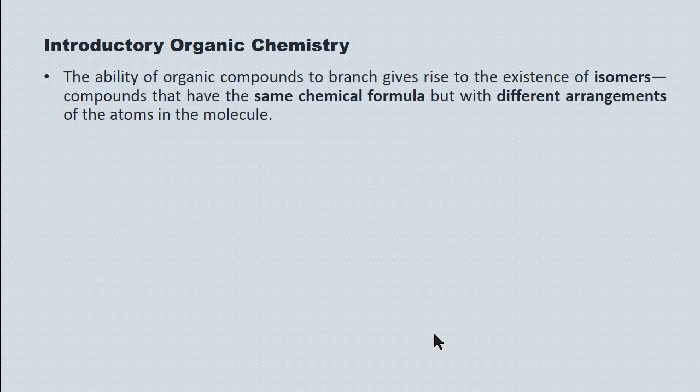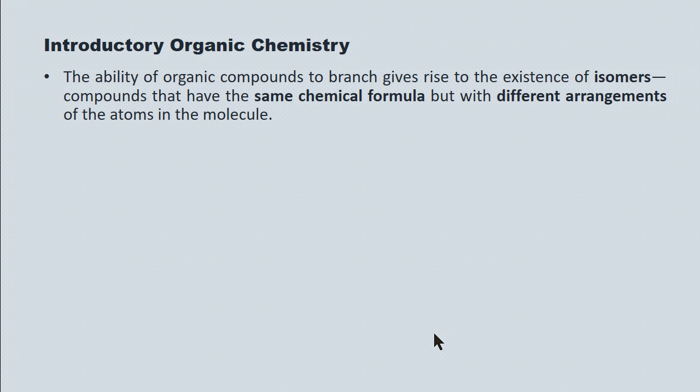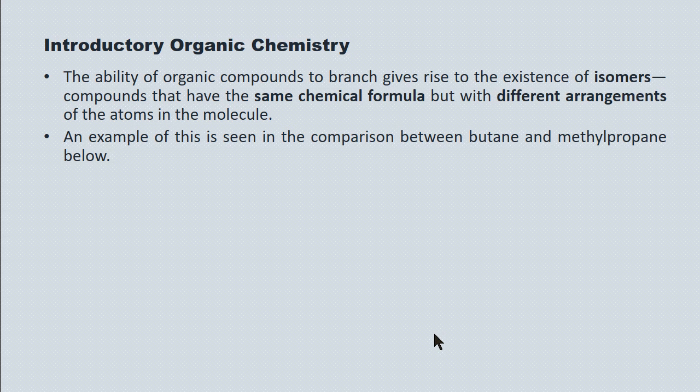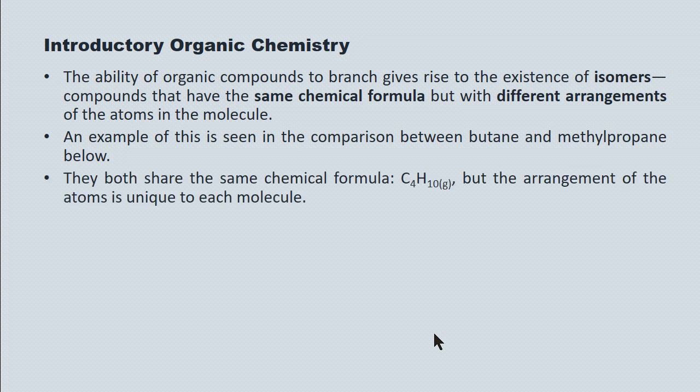The ability of organic compounds to branch gives rise to a concept of isomerism, and to what are called structural isomers. Structural isomers are a certain type of isomer that you're responsible for. Isomers have the same chemical formula, but they have different arrangements to the atom within the molecule. An example below will be the comparison between butane and methylpropane. Each of these has the same chemical formula, C4H10, but the arrangement of the atoms is unique to each molecule.